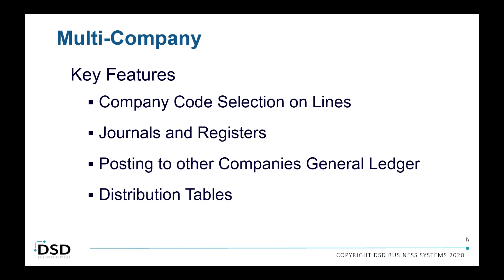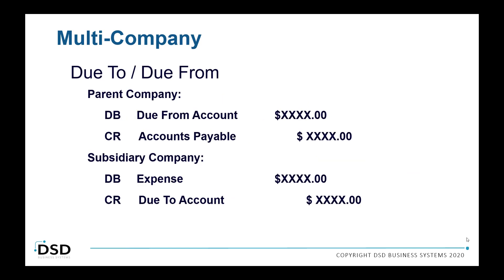We also have a separate product called APDT — Distribution Tables — that allows you to set up distribution tables you can assign to a vendor with multiple lines for different company expensing. APDT is a separate product you can purchase, but it is integrated with AP Multi-Company.